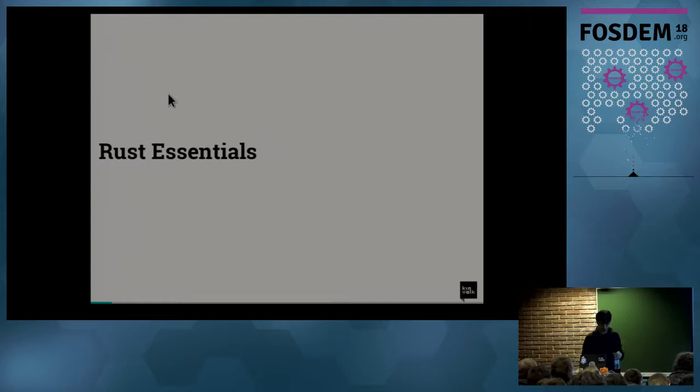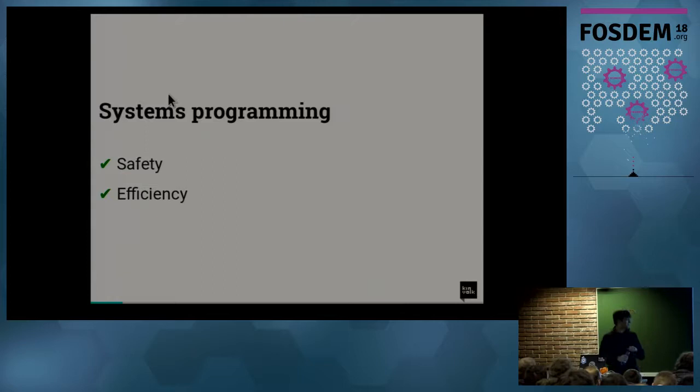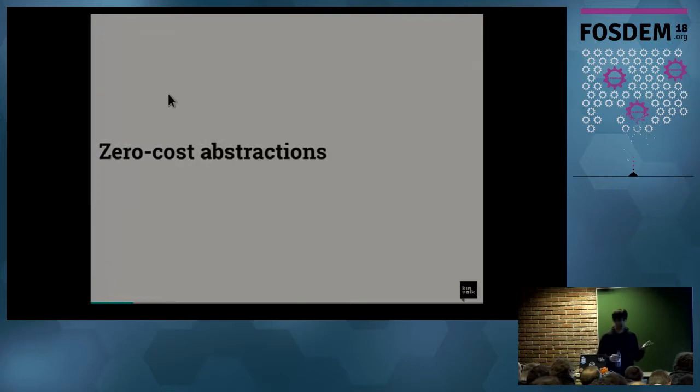Mainly it's like a system programming language. Some programming languages ensure safety, some programming languages ensure efficiency. But with Rust, you have both of them at the same time. There's the focus on both of these things in the design of the language. So it makes it a really awesome language in my opinion. And you have a concept of zero cost abstractions.